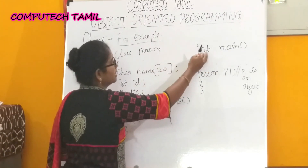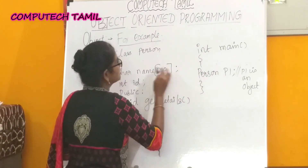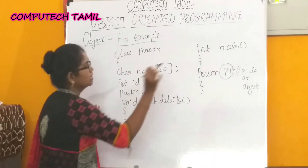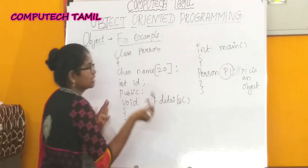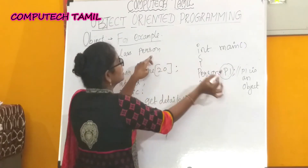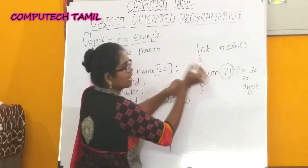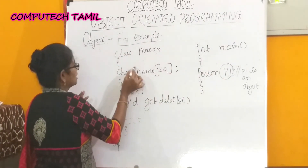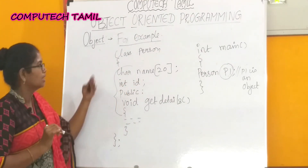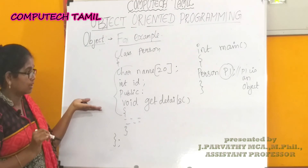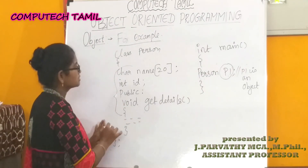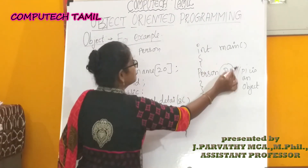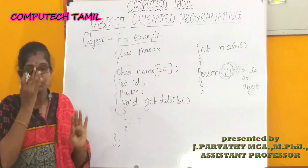In the main function, we write: Person p1. Here, Person is the class name and p1 is the object. Using p1, we can access the data members and member functions. If you have any data members or member functions, we can access them using p1.